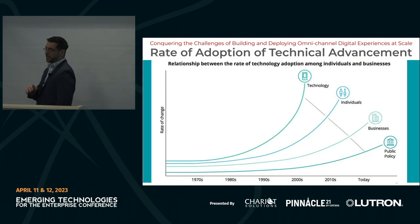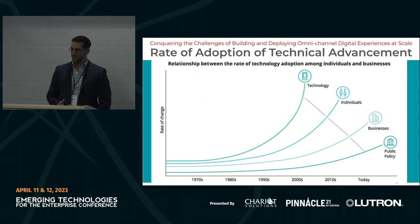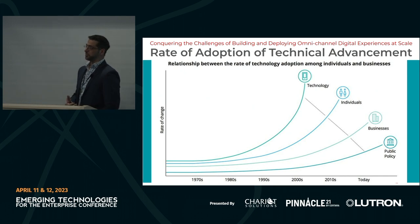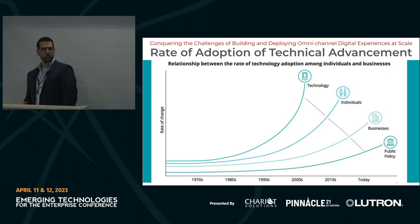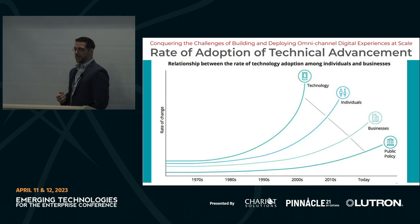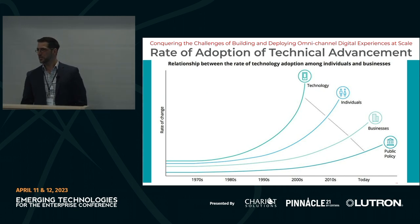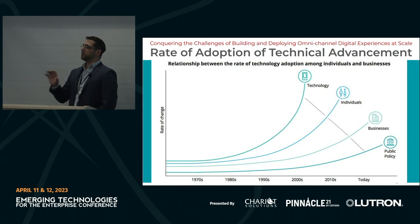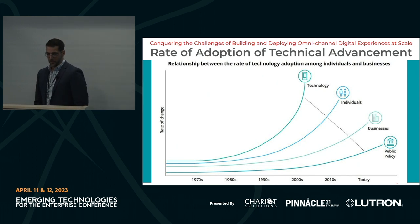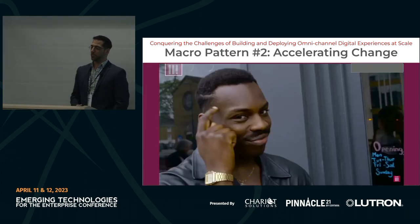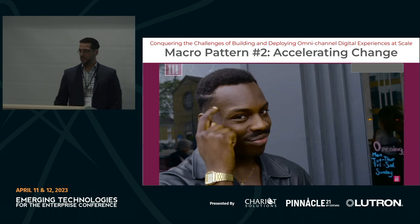Another key concept is the rate of adoption of technical advancement. Technology is advancing a lot faster than individuals can pick it up — faster than most businesses can pick it up — and it's faster than public policy can pick it up. That's important as we talk about privacy and what AI means for the space. This adoption curve is a huge piece of information to watch, especially as the technology starts to go sharper and sharper up. The second macro pattern: we need to acknowledge the accelerating rate of change.